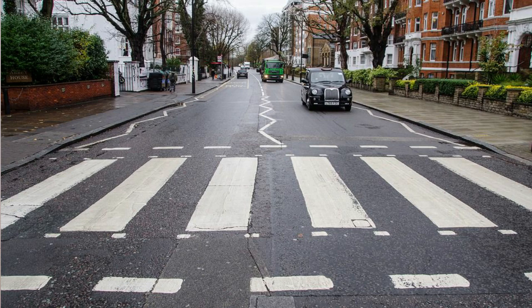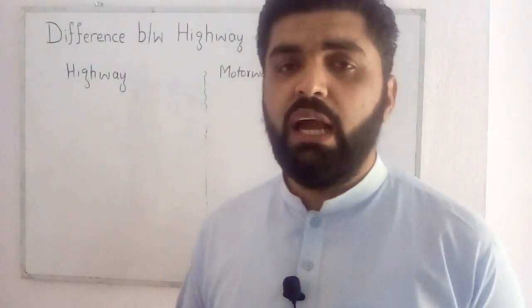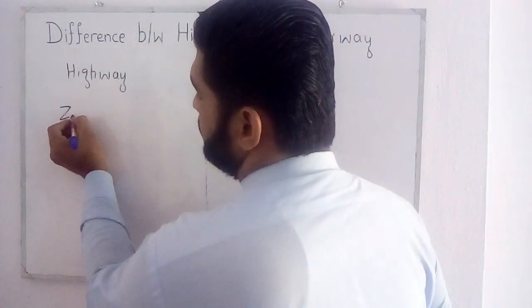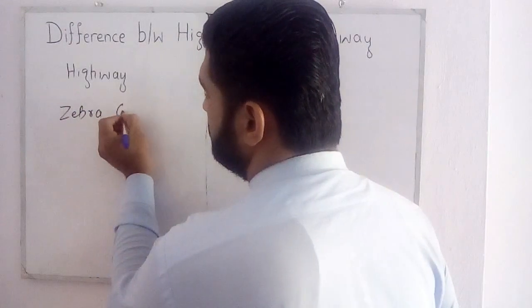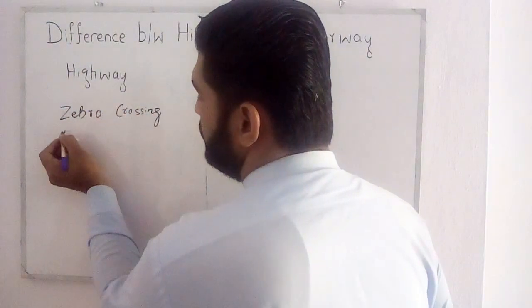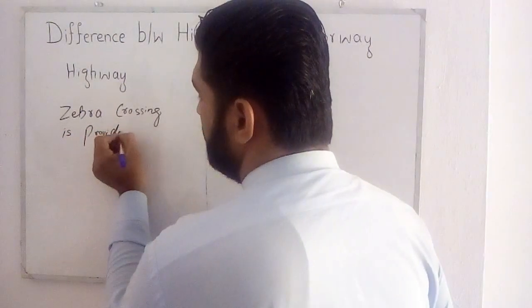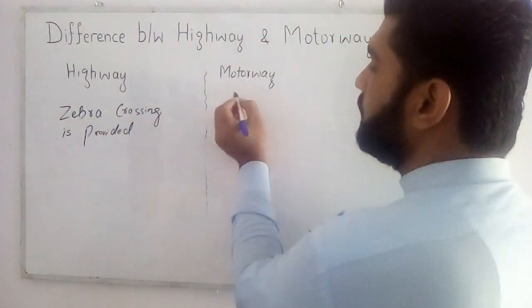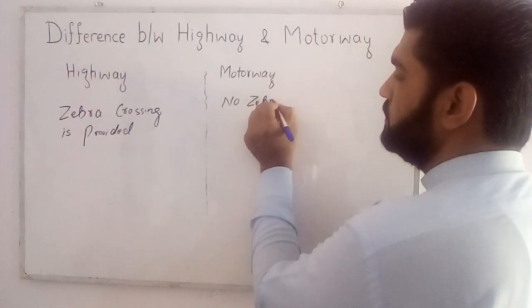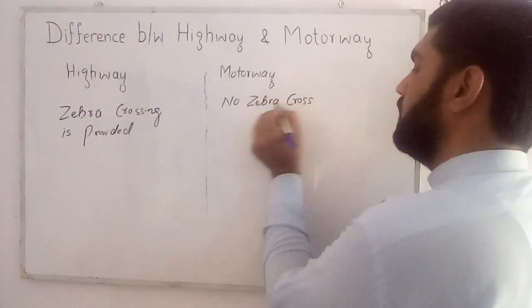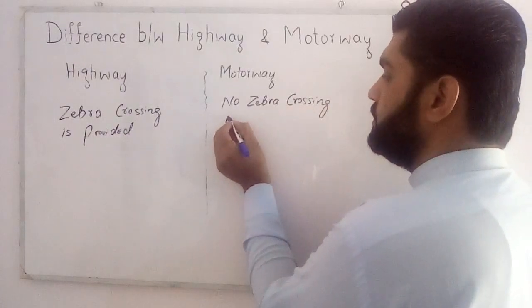The fourth difference between highway and motorway is that on a highway, zebra crossings are provided for pedestrians to cross the road. You can see a zebra crossing in the picture provided on the highway. While on a motorway, there is no zebra crossing provided. This is the fourth difference between highway and motorway.